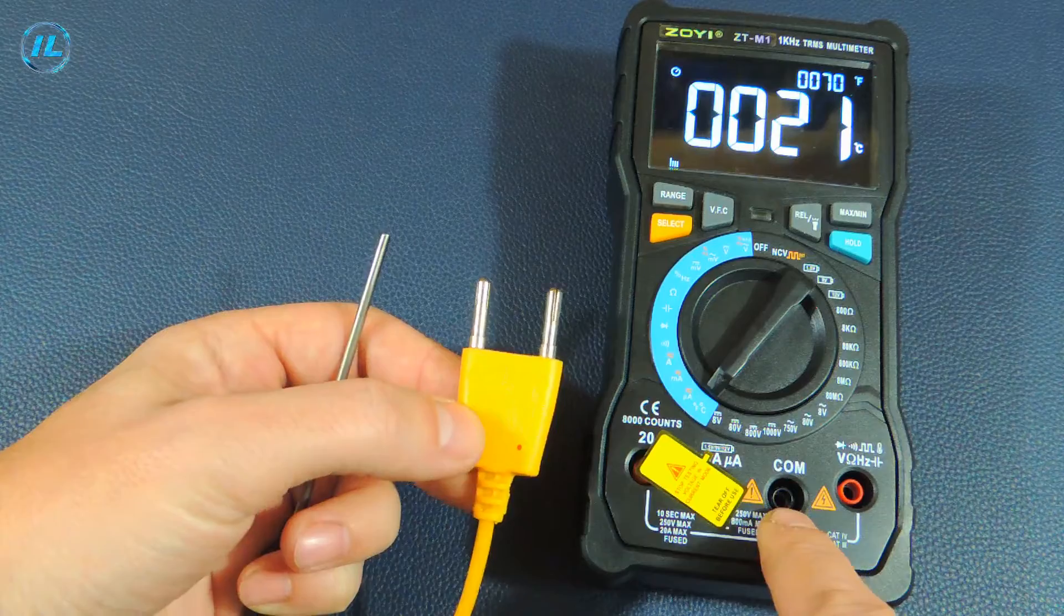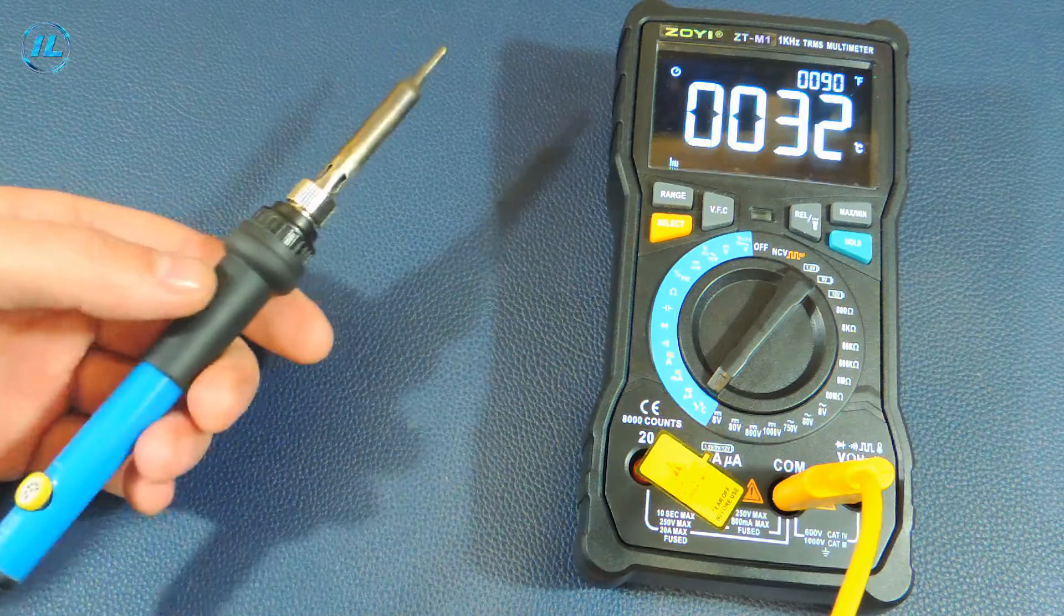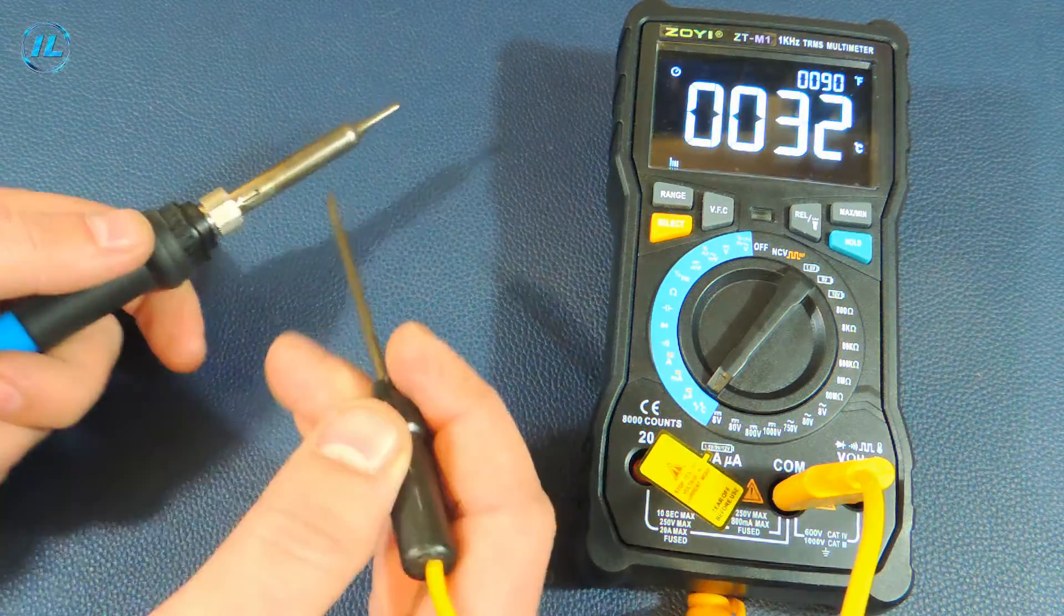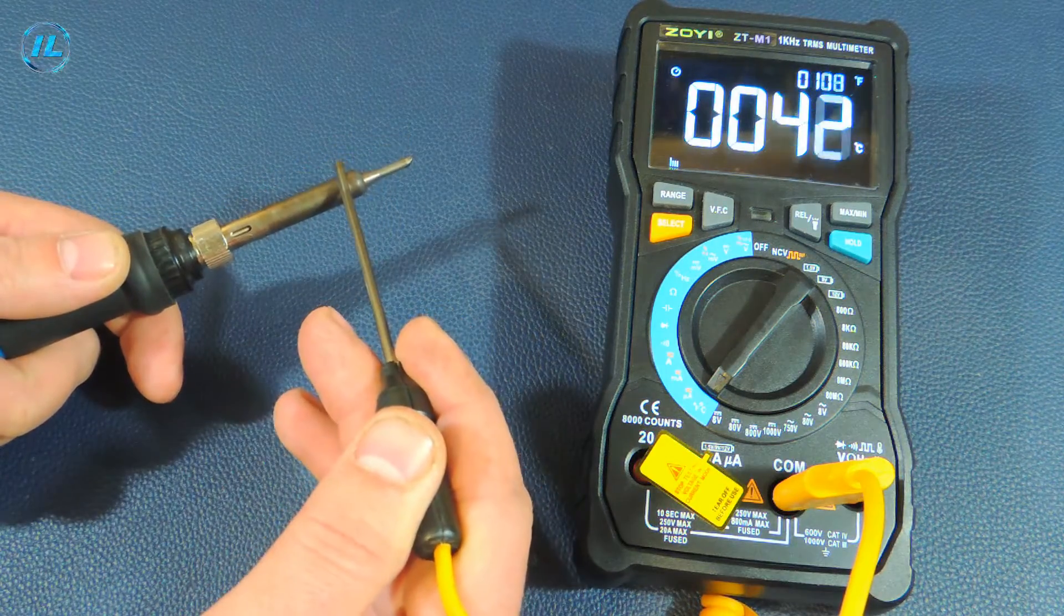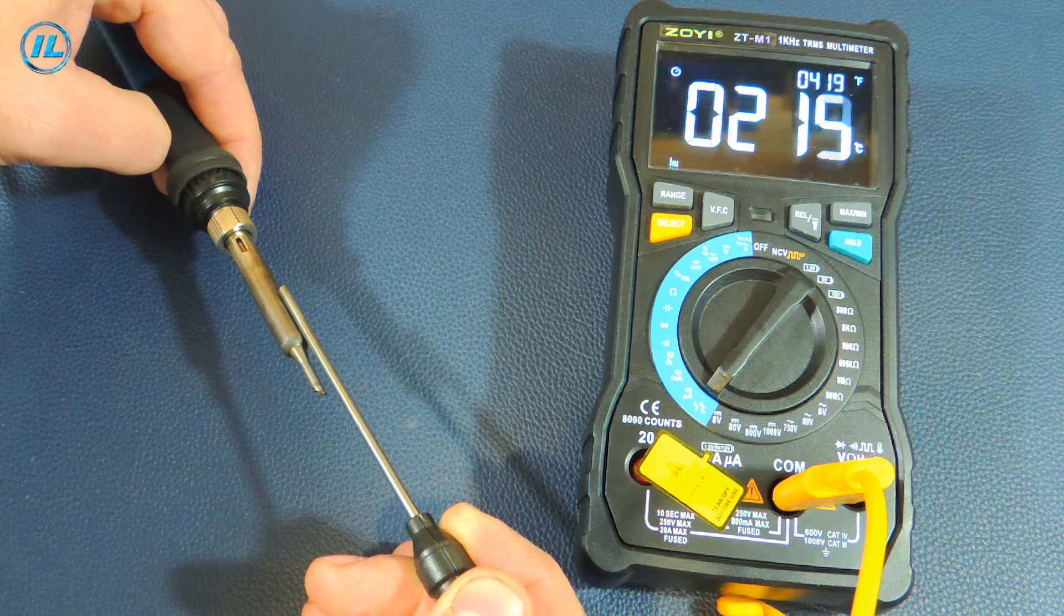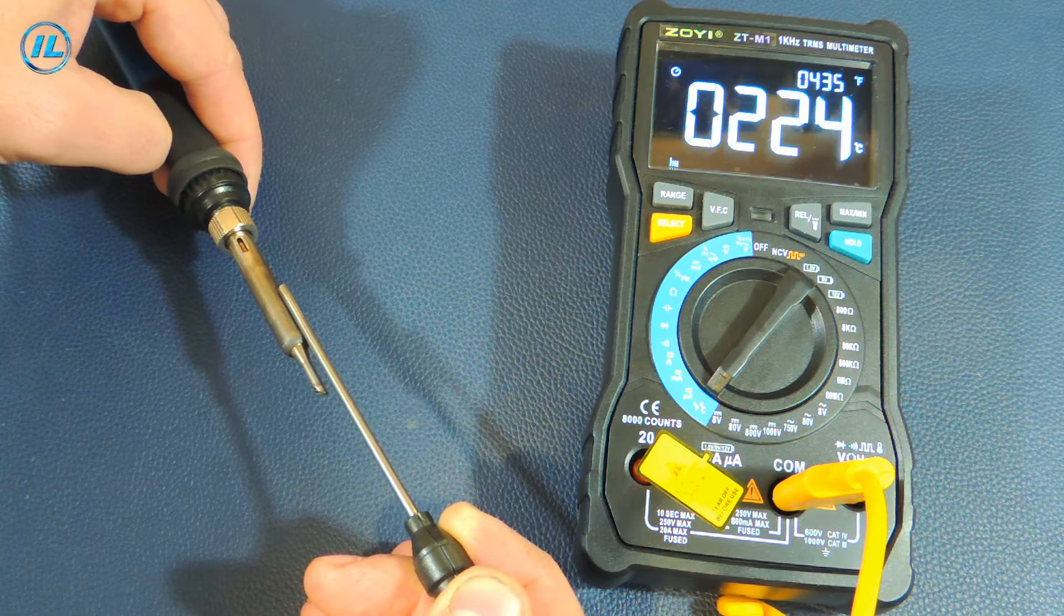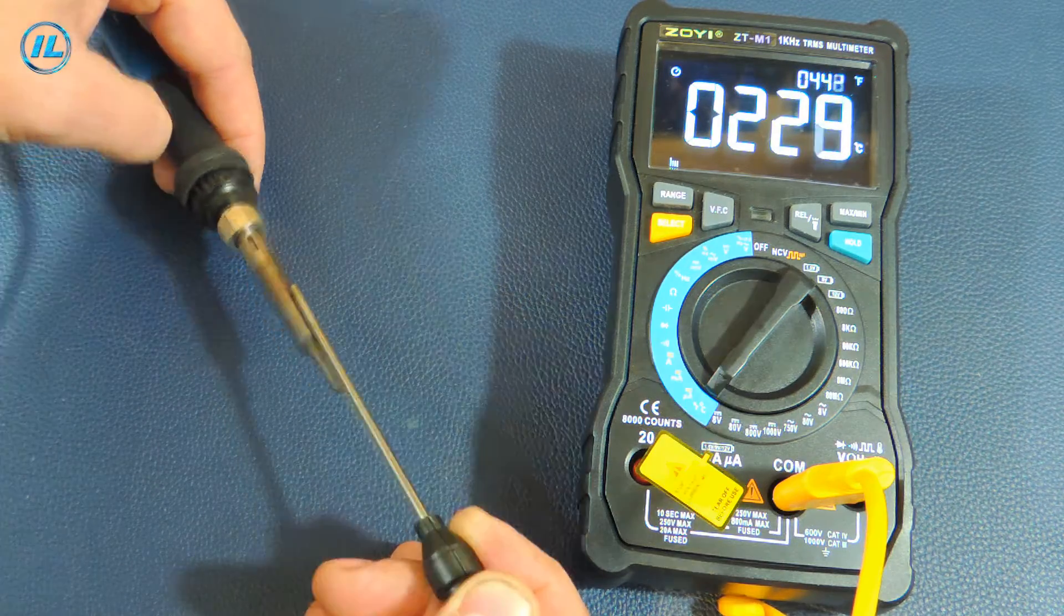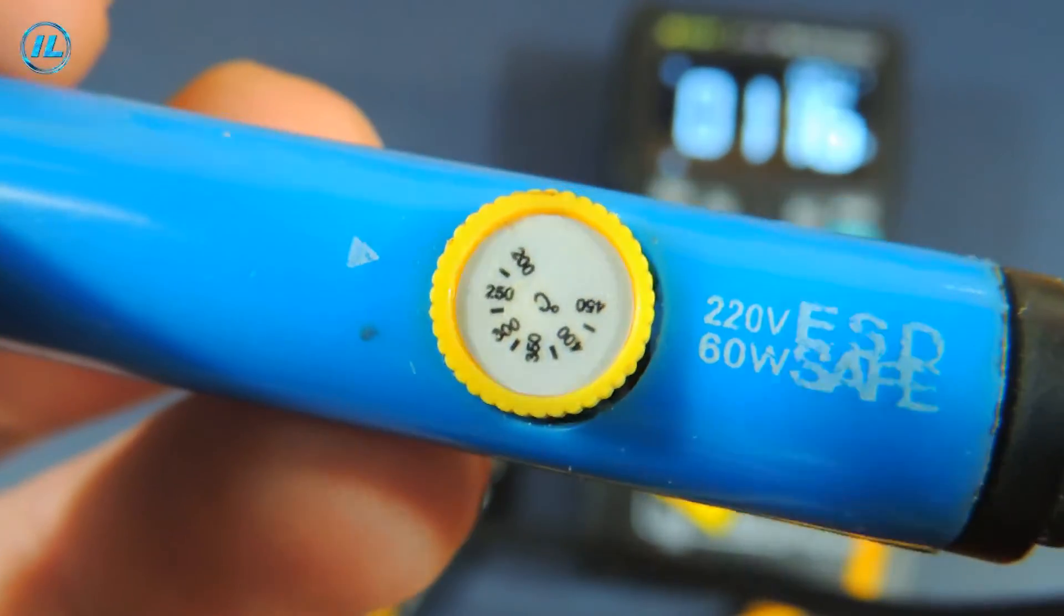I'm measuring the temperature of the tip of this soldering iron. 230 degrees. The soldering iron has about the same temperature.